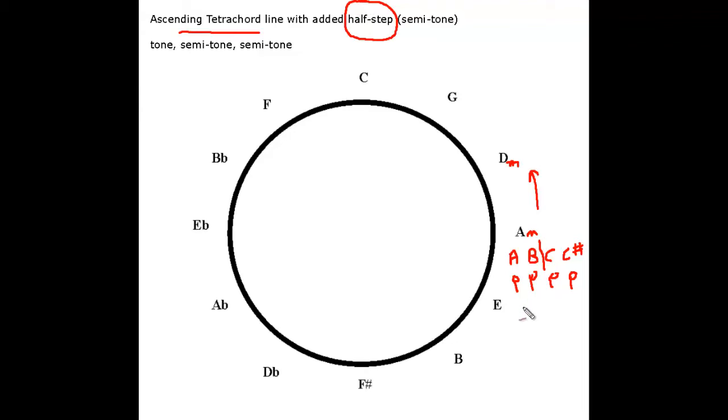In this blues progression I want the ascending tetrachord line to cover two bars. So I'm going to get each note to ring on for two beats: A for two beats, B — that's one bar — then the next bar I have C ringing for two beats, and then C sharp. That's my ascending tetrachord line using the formula of tone, semitone, semitone, which creates a two-bar ascending tetrachord line if I let each bass note ring on for two beats.